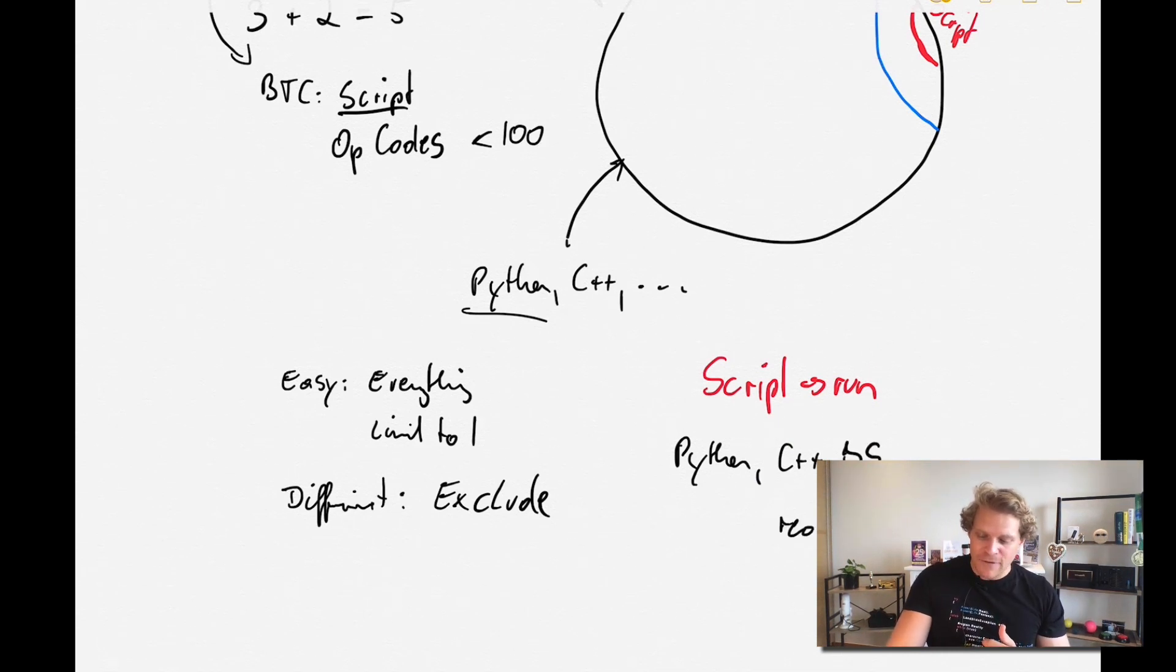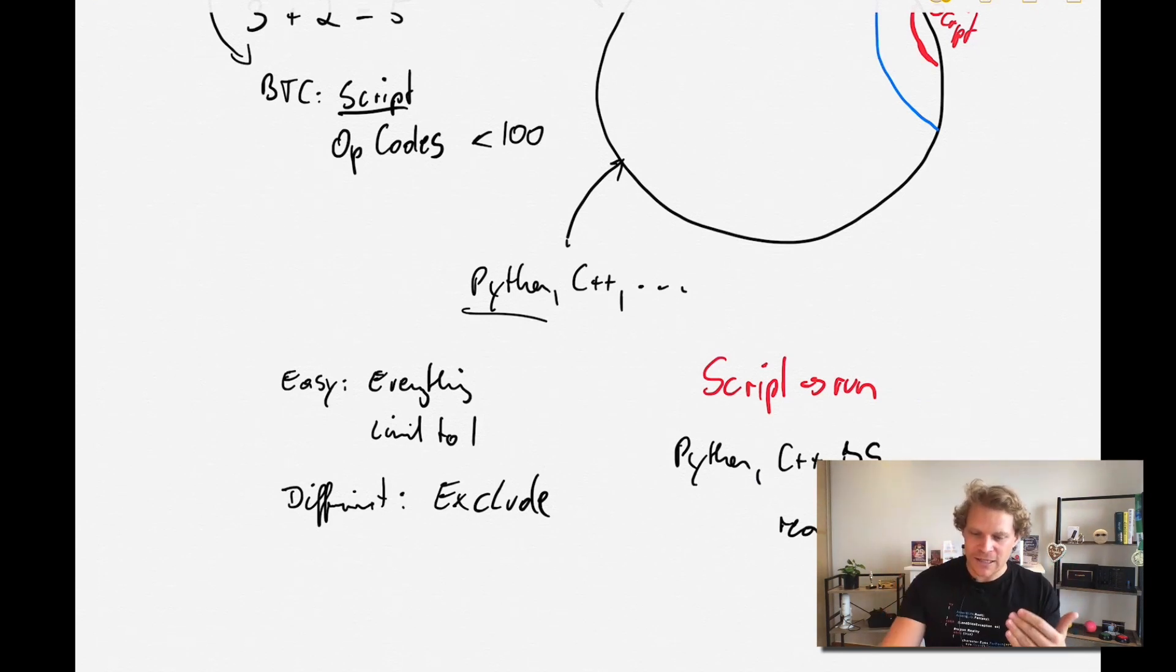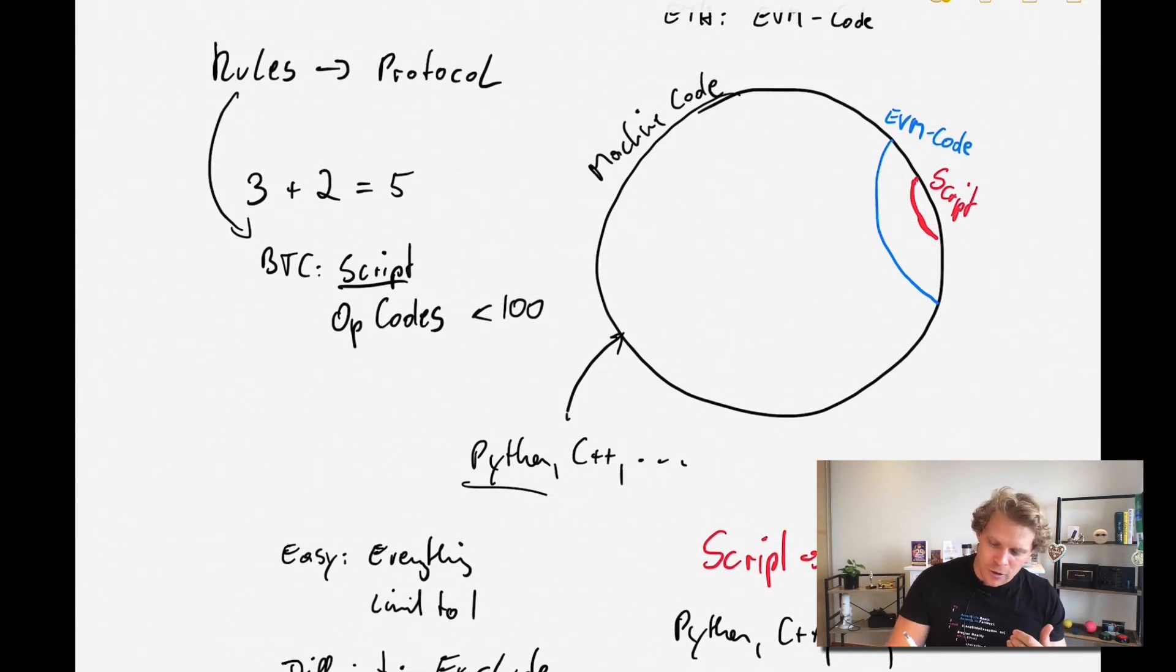But if you want to talk to all the other nodes, these nodes need to talk in Script. That's the only way how you can actually run it, because that's the only way how you can be sure that only this part of the code can get executed and not all the other things.